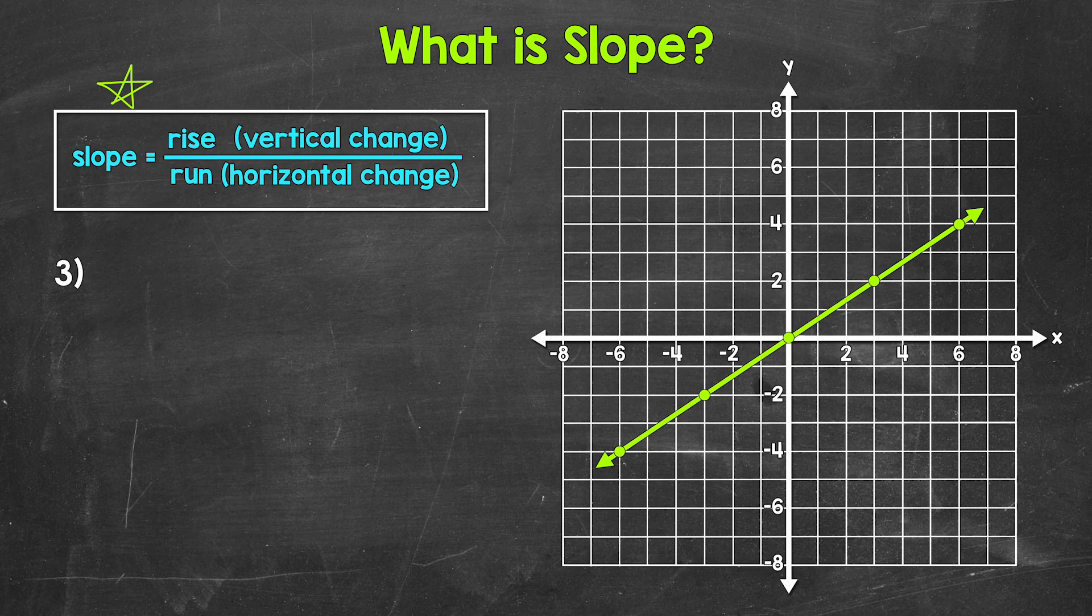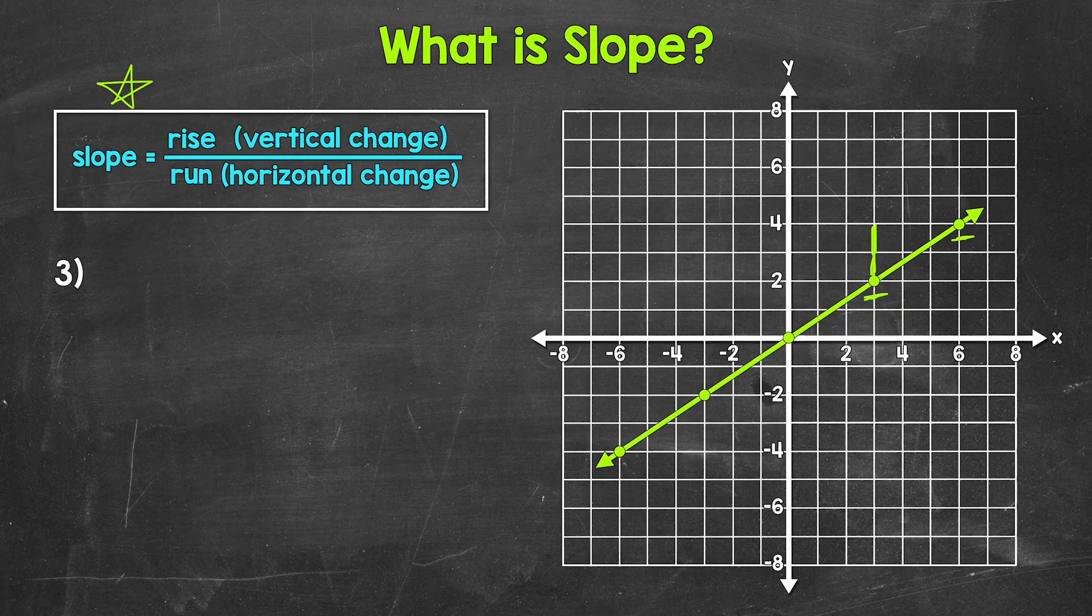Now when finding slope, we use any two points on the line. It doesn't matter which two. We will get the same slope. Let's pick this point right here and this point right here. We need how far up and how far over we go between these two points. We're going to move from the left point to the right point. We go up one unit, two units, and that aligns us with the other point. So our rise, the vertical change, is two. Now we need to see how far over we go. One unit, two units, three units. That's our run, the horizontal change. So that's three. And that's all the information we need for slope.